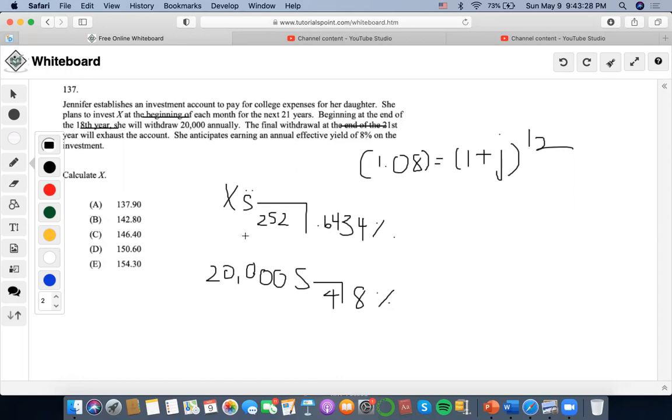If we are withdrawing $20,000, it makes sense to explicitly calculate the $20,000 withdrawal from the whole future value equation.